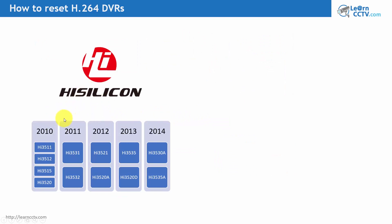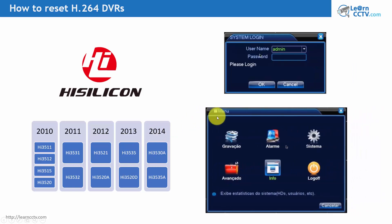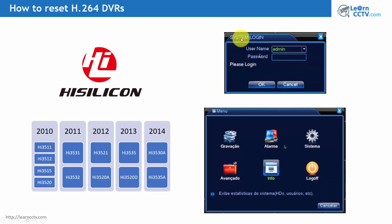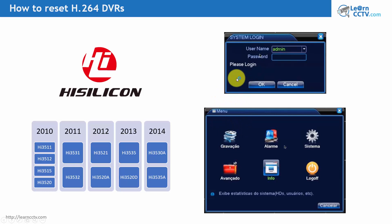HiSilicon manufactured these chips from 2010, 2011, 2012, 2013, and 2014 — so you have all those chip versions. If you have one of those, you can reset using the password too. Usually you'll see a login screen like this: system login, username, password — dark blue like this — or in other languages, but it's the same menu screen. DVRs using a HiSilicon chip are going to work with the password generator.